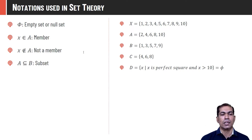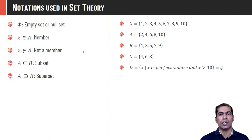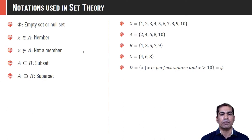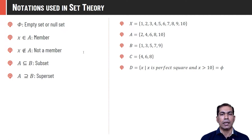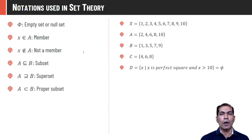A ⊇ B (A superset of B): if A contains all the elements of B, then A is a superset of B. In our example, A is a superset of C because all elements of C are present in A. The universal set is a superset of all sets, and all sets are also supersets of themselves.